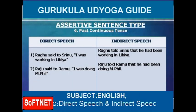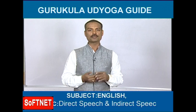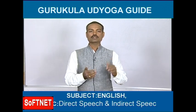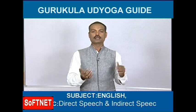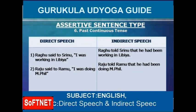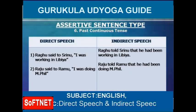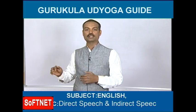Next tense: past continuous. Helping verbs for past continuous are 'was' and 'were', with the main verb in -ing form. If they give direct speech from past continuous tense, it should be changed to past perfect continuous tense. Example: 'Raghu said to Srinu, I was working in Libya.' 'Said to' becomes 'told'. 'I' becomes 'he'. Past continuous 'was working' changes to past perfect continuous 'had been working'. Answer: 'Raghu told Srinu that he had been working in Libya.'